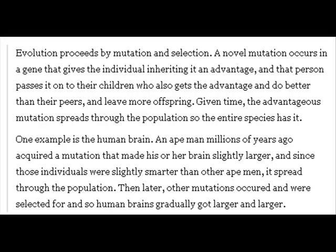Evolution proceeds by mutation and selection. A novel mutation occurs in a gene that gives the individual inheriting it an advantage, and that person passes it on to their children, who also get the advantage and do better than their peers and leave more offspring. Given time, the advantageous mutation spreads through the population so the entire species has it.